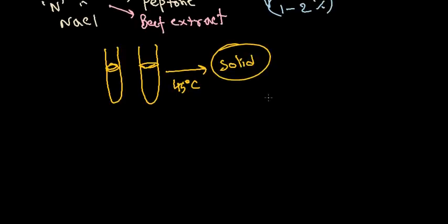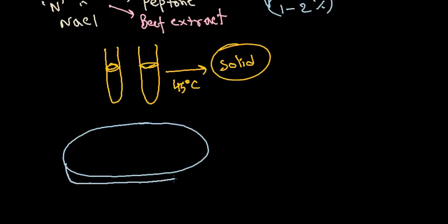When we want to work with solid agar media, we use large round dishes called petri dishes — you've probably heard of petri plates before. Petri dishes have a large surface area, which is filled with the agar-containing media. We allow it to cool and solidify at a particular temperature, and then we can use this as solid media.